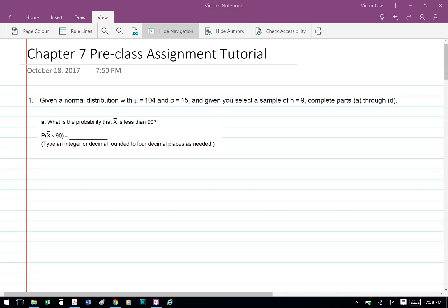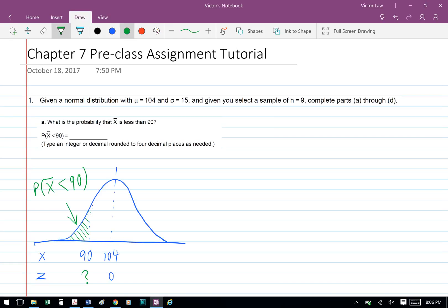Part A, what is the probability that X bar is less than 90? To solve this question, we can first draw a Z distribution graph, and basically the area under the curve is the probability.